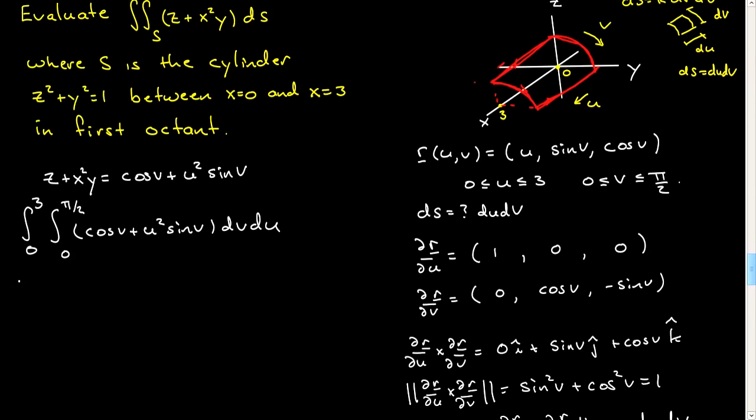Easy integral to do. 0 to 3, that'll be sine v, plus u squared, minus u squared, cosine v, from 0 to pi on 2. That's integral from 0 to 3. You can plug in there. You'll get a 1 and a 0. This will come out to be 1 plus u squared du. We can now integrate to get u plus u cubed over 3, evaluated between 0 and 3. And you do that, and you find 12.